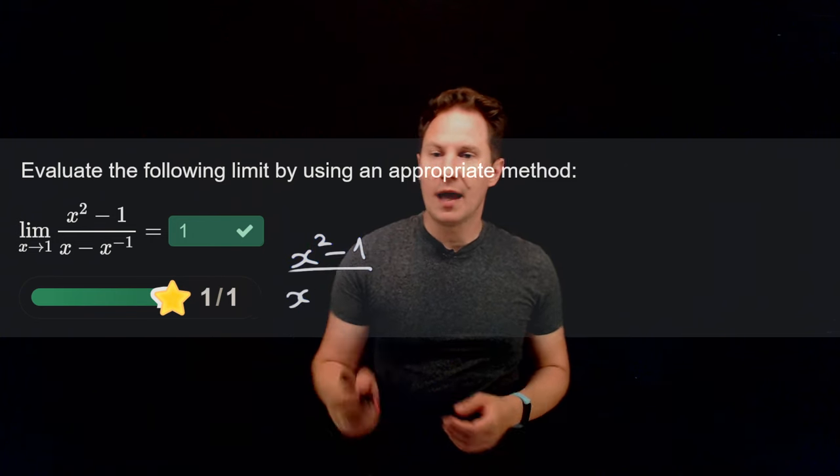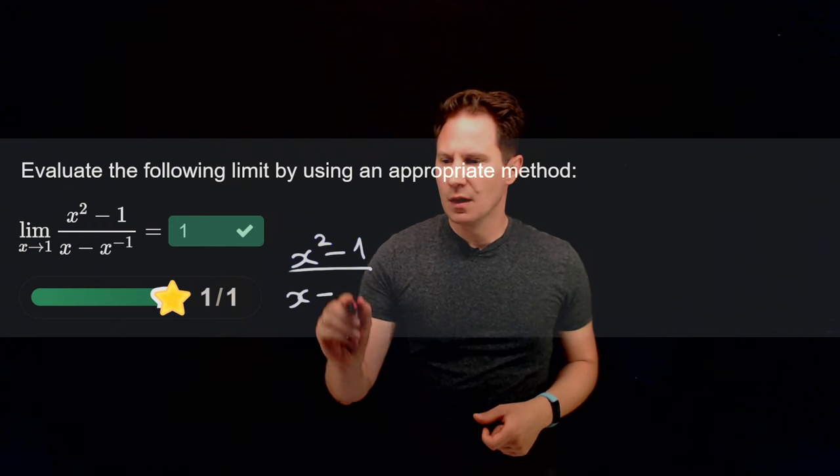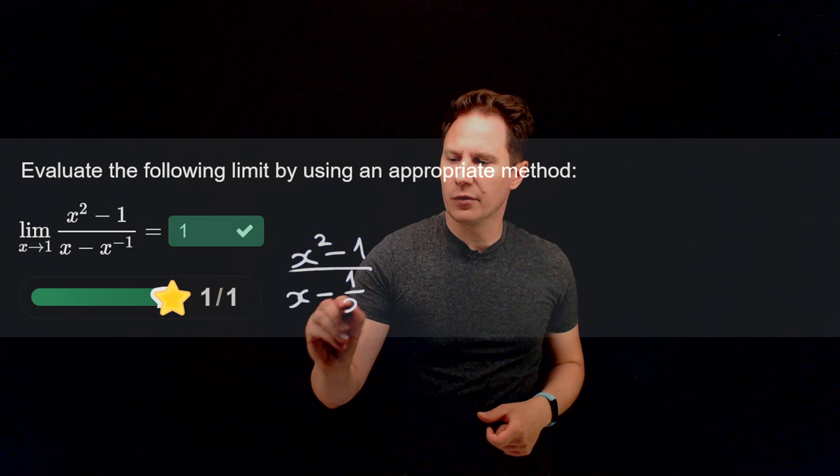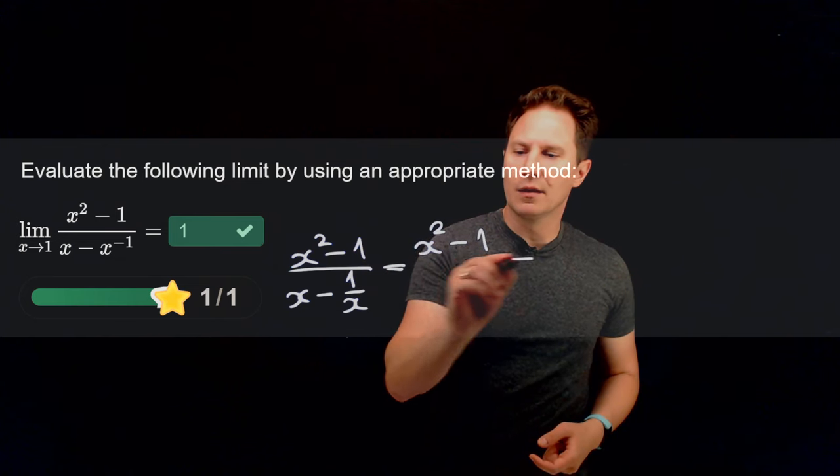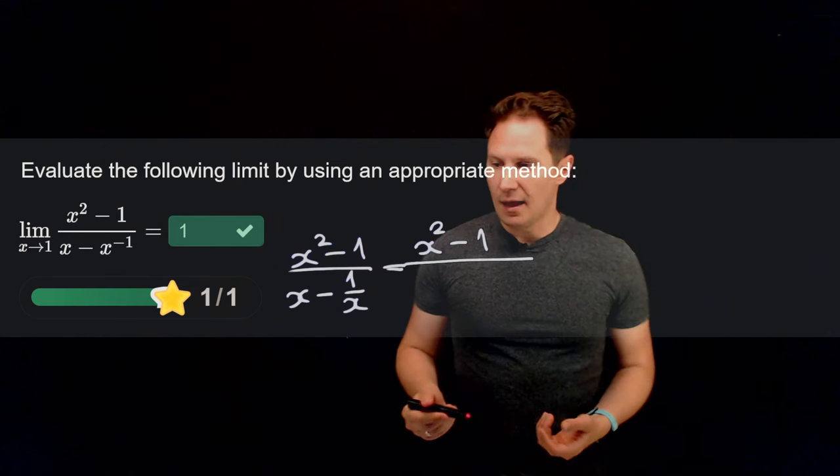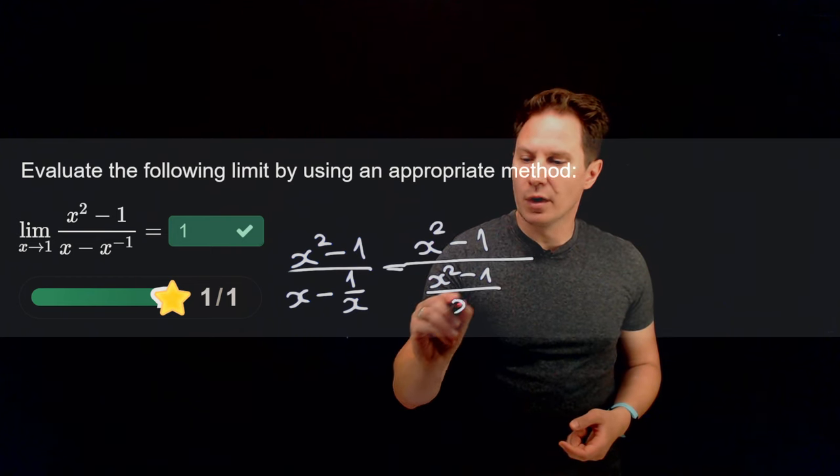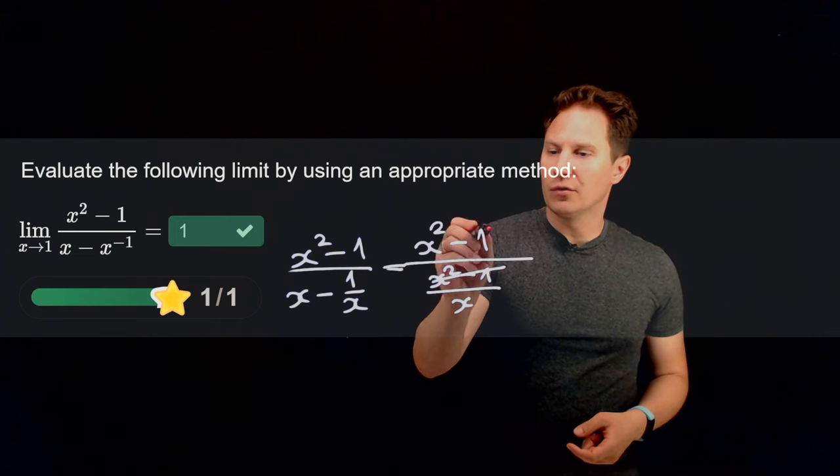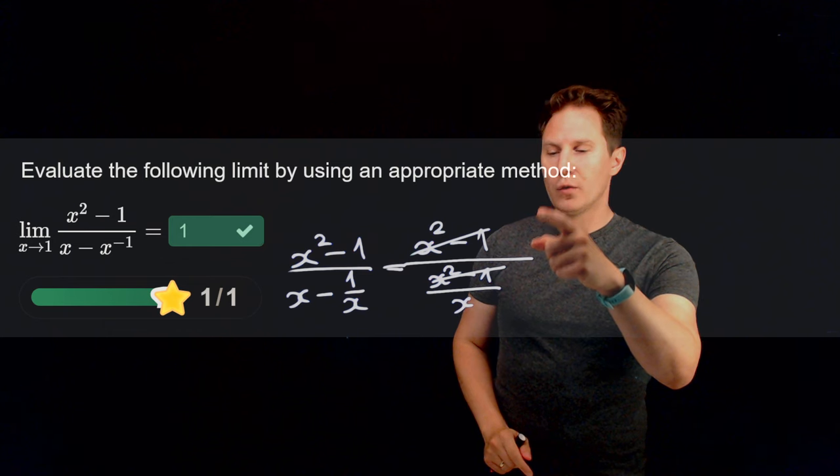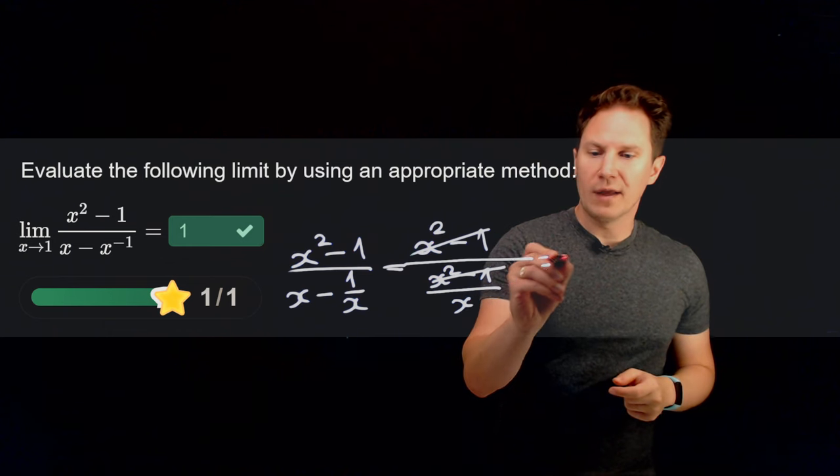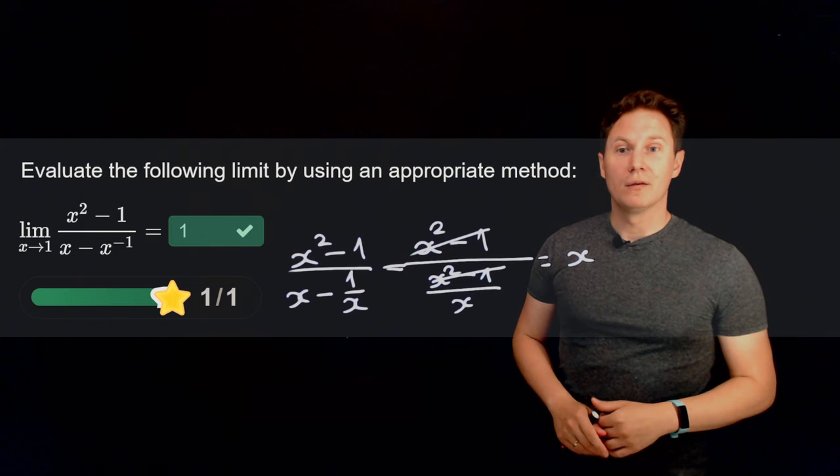because we have in the denominator x minus x raised to the negative first power, so that's 1 over x, you can write it like that. Let's combine those terms in the denominator, if we do that the common denominator of x will leave us with x squared minus 1 over x, then we may cancel the x squared minus 1 factors, leaving us with 1 over 1 over x, so that's just x, and then direct substitution gives us the limit of 1.